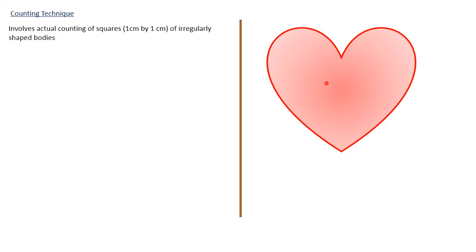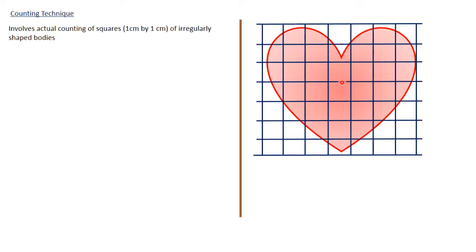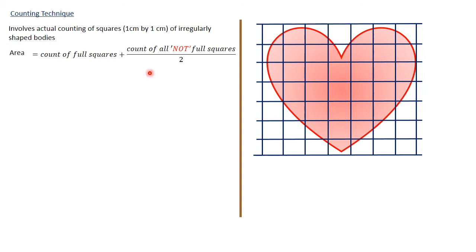First of all, we divide the irregular shape into squares equal to one by one centimeters. Then we count the full squares and we add an average of all the others. There could be a small portion in one square but a big part covered in another, so we find an average. We count all full squares — if there are 20, that is 20 centimeter squares — then we count all squares that are not full and divide by 2. If there are 18, you divide by 2, so that represents 9 full squares.